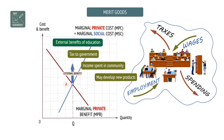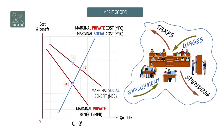If we add the external to the private benefit, we get the social marginal benefit. Graphically, while this suggests more should be consumed, individuals are unlikely to understand the full benefit of Merit Goods — a phenomenon called information failure. Social efficiency will occur at the output where marginal social benefit equals marginal social cost, at QS.